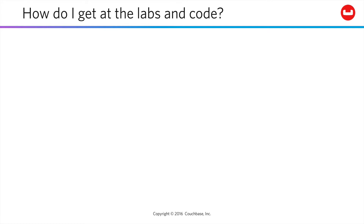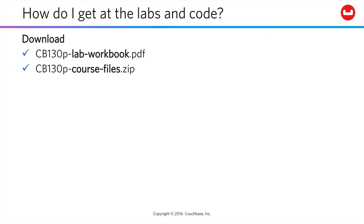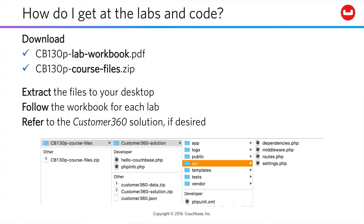To get the labs and code for this course, from the learning management system download the lab workbook PDF and the course files. Extract the course files to your desktop and follow the workbook for each lab at the end of each video lesson. If you wish, you can refer to the Customer 360 solution provided within the course files — the application you're otherwise going to build from scratch. Everything's already done for you if you want to get through it fast and easy.